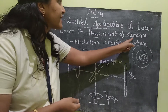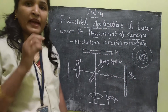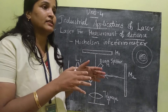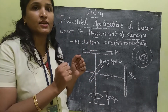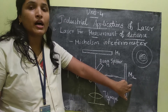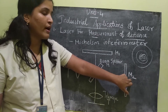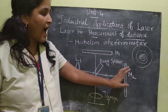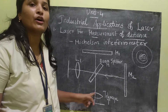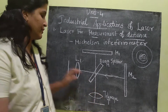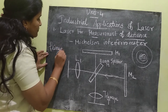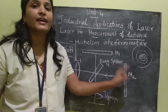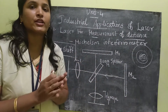Now, how is distance measured? The material or object whose distance is to be measured is attached to mirror M2. While the object is moving, the M2 mirror also moves. As it moves, the interference fringes shift. This fringe shift is based upon the movement of the M2 mirror, and this is how the distance of any object can be measured.